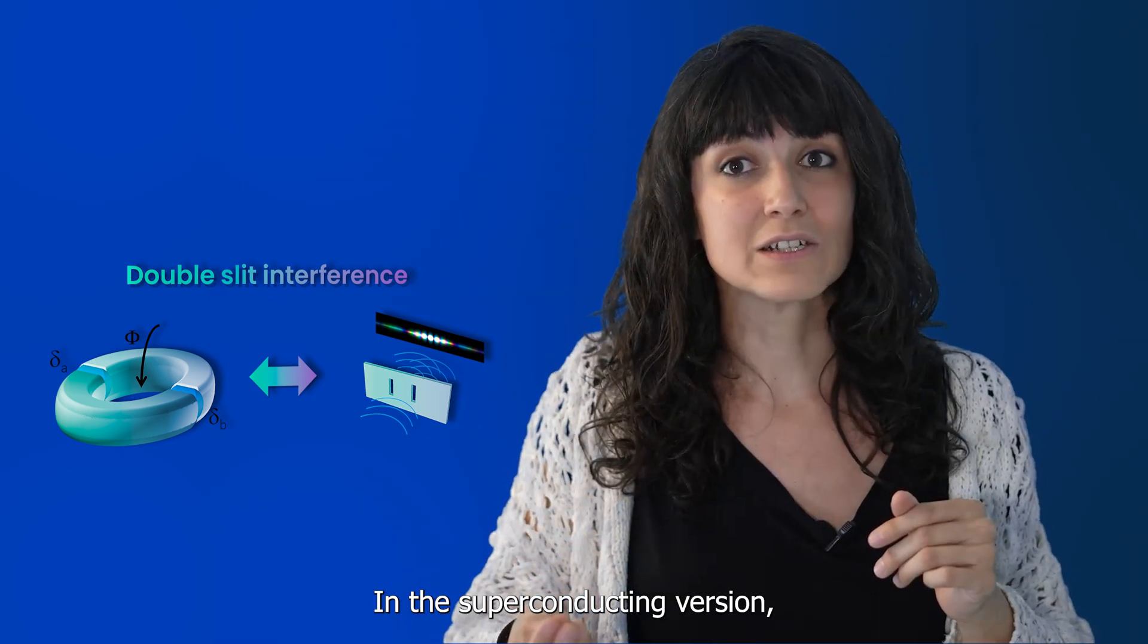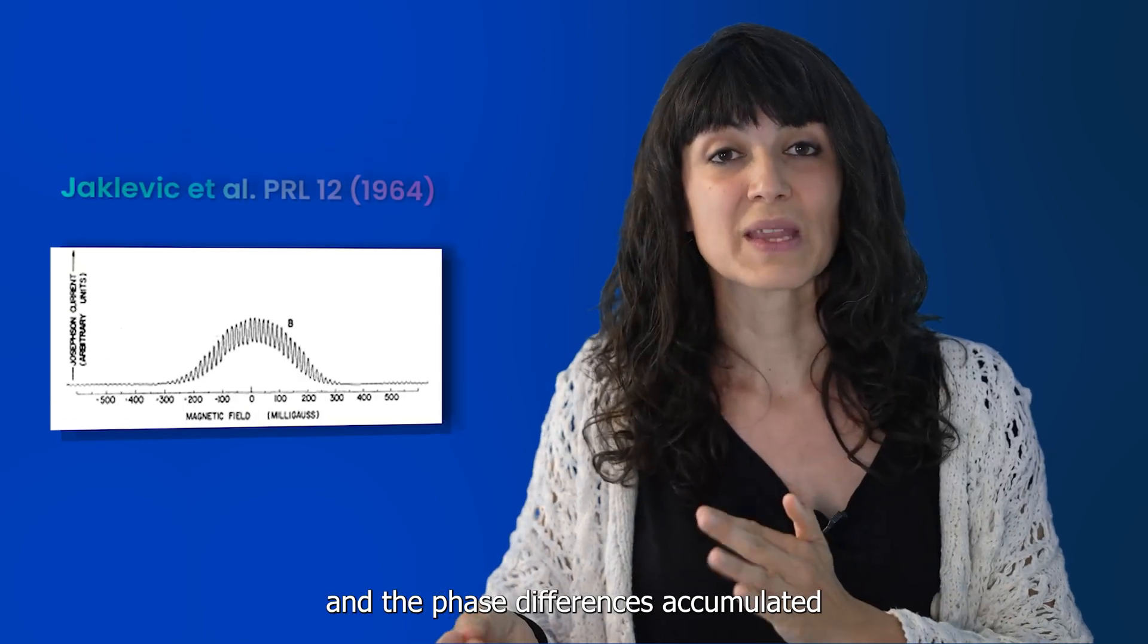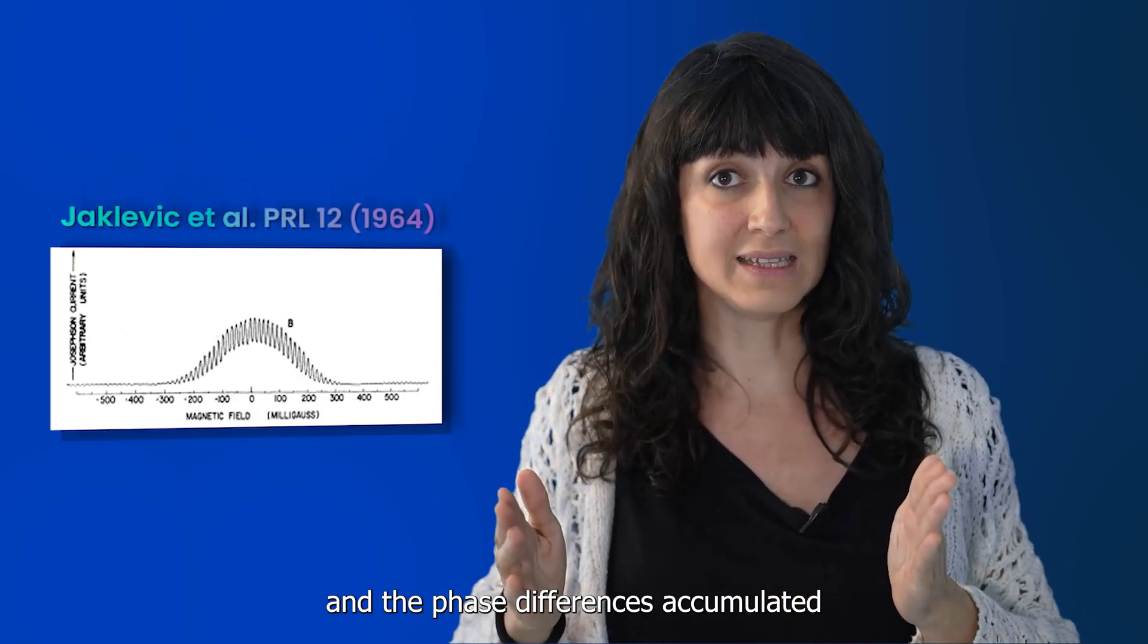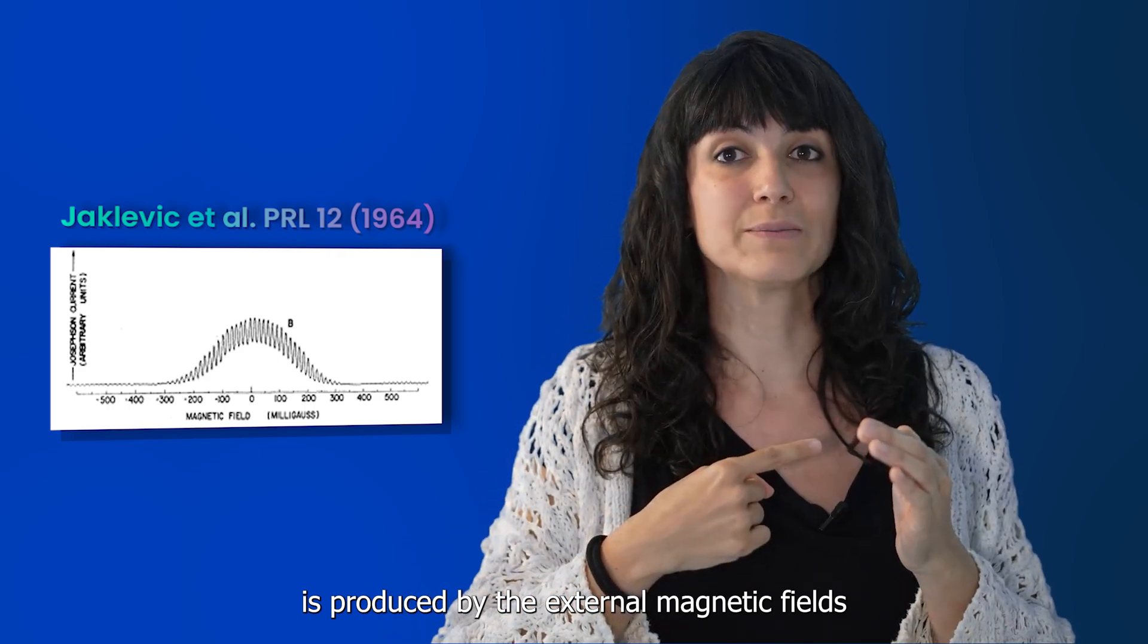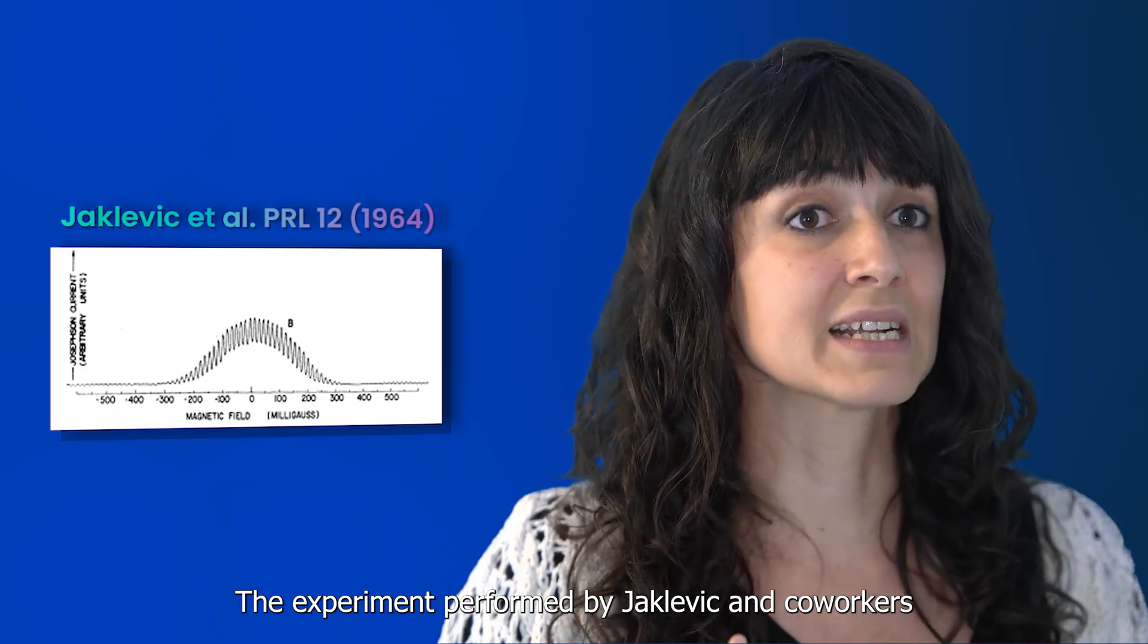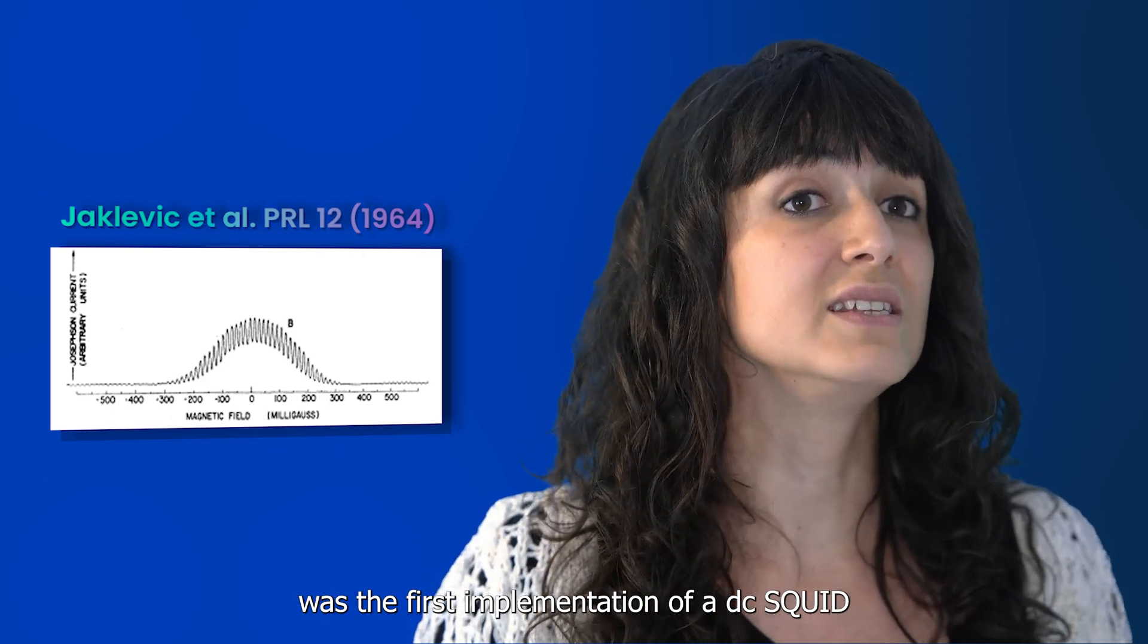In the superconducting version, the role of the slits is played by the Josephson junctions and the phase differences accumulated through different optical paths is produced by the external magnetic field. The experiment performed by Jaklevic and co-workers was the first implementation of a DC SQUID.